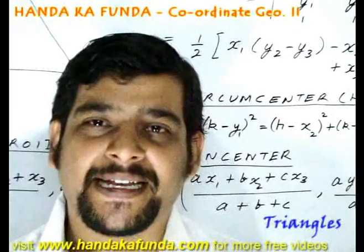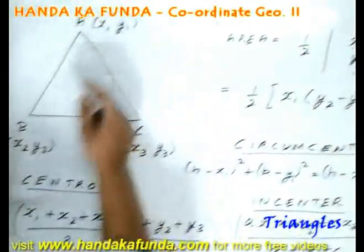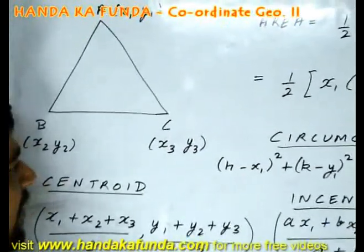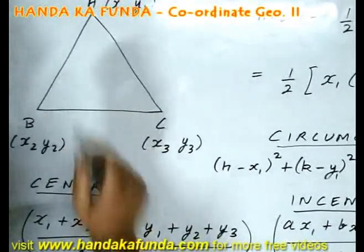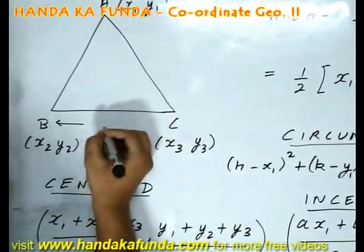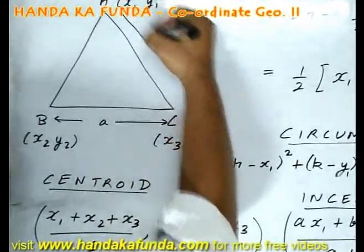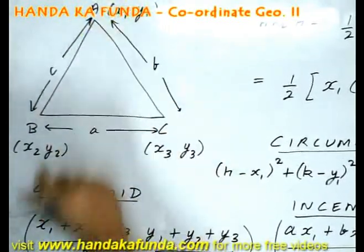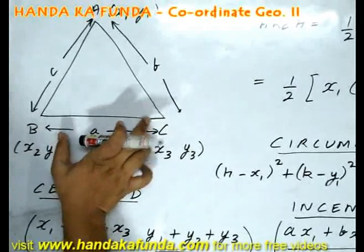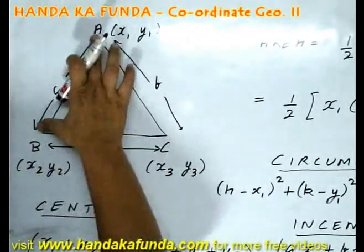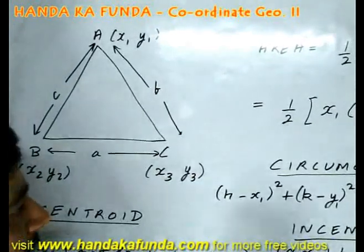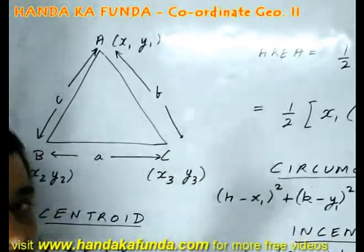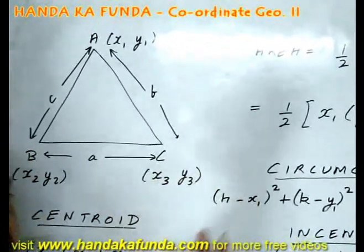Let us look at coordinate geometry in the case of triangles. Say I am given a triangle ABC which has A as x1y1, B as x2y2, and C as x3y3. With the help of the distance formula I can find out all these distances. That is BC can be written as a, AC can be written as b, and BA can be written as c. Please note: side a is opposite to point A, side b is opposite to point B, and side c is opposite to point C. If it emerges as an equilateral triangle, you can use that idea; maybe it emerges as a right angle triangle, you can use that formula.